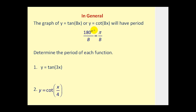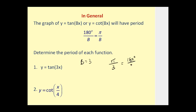If we want to determine the period of y = tan(3x), we have a value of b equal to three. So the period will be pi divided by three. Therefore the period is pi over three radians, which is equal to 60 degrees, or 180 degrees divided by three. In radians it's pi over three, and in degrees it's 60 degrees.